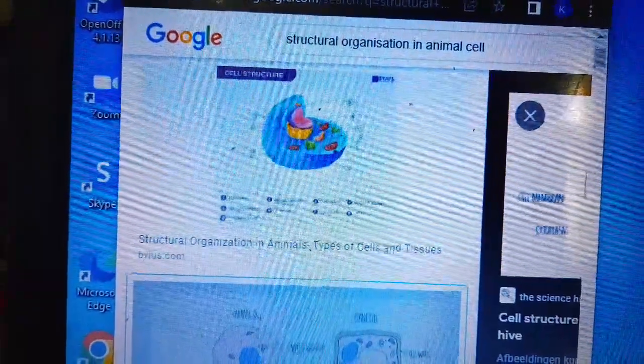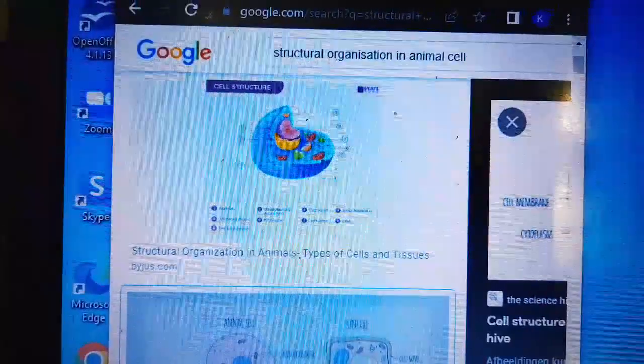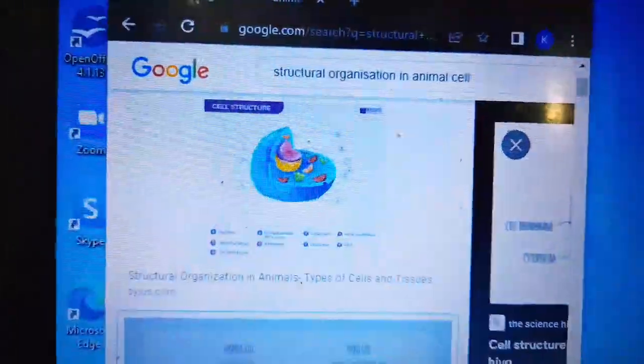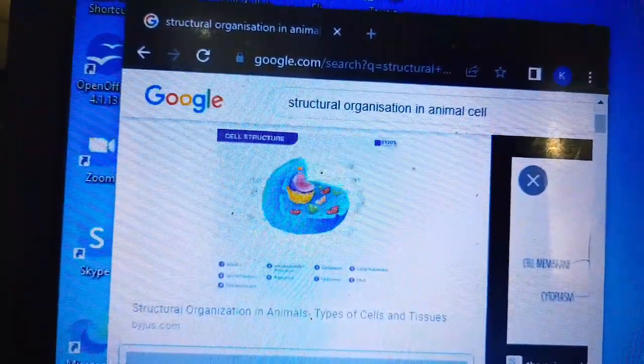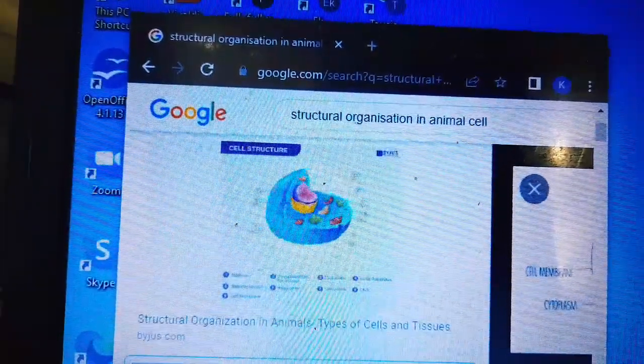Assalamualaikum, welcome to my channel, The Educators. Today I am going to tell you about structural organization in animals. The structural organization in animals starts from the smallest fundamental unit, the cell. A group of cells that perform a similar function forms tissues.